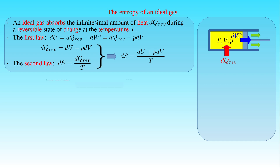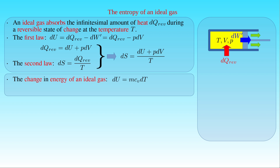For an ideal gas of mass M, the infinitesimal change in its internal energy is given by the mass M times the specific heat capacity C_V for constant volume, times the infinitesimal change in its temperature T. We can also apply the ideal gas law stating that P times V equals M times the specific gas constant R_S times T, to express the pressure P as M times R_S times T divided by V.